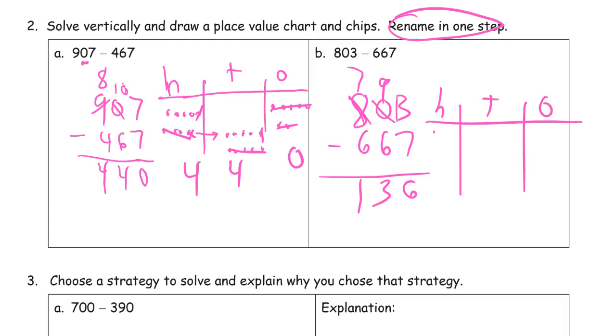And 100s, we need 8 hundreds. I don't have enough room for rows, so I'm going to make columns of 5 groups. There's 800 and 3. And now I can cross out 7 ones. And 6 tens. And 6 hundreds. I have 100 left. I have 3 tens left. And I have these 3 and those 3 for 6 ones. It's 136.